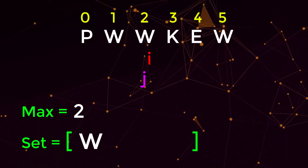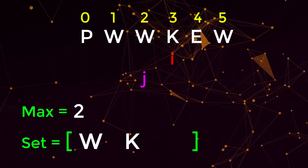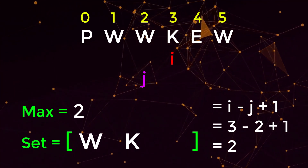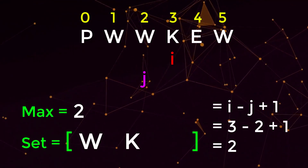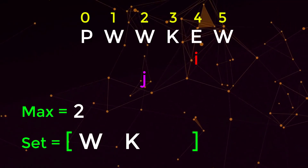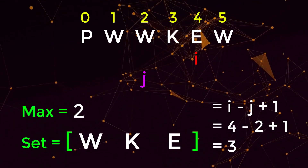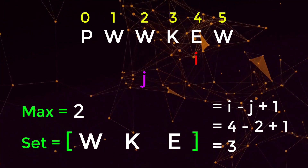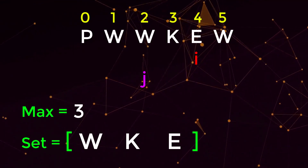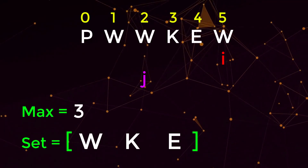We move i and check if 'k' is in our set — it's not, so we add it. We compute the window length: i minus j plus one equals two, corresponding to substring 'wk'. Max is already two, so no update. We move i again and check if 'e' is in our set — it isn't, so we add it. The window length i minus j plus one is now three, corresponding to substring 'wke'. Three is greater than our max, so we update max to three.